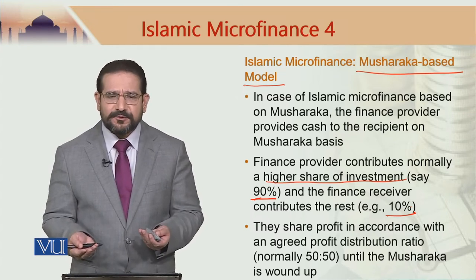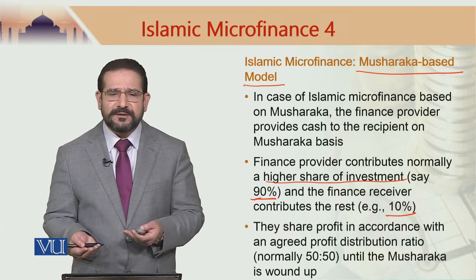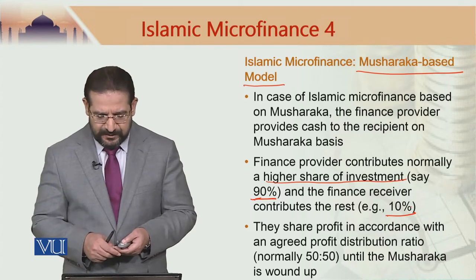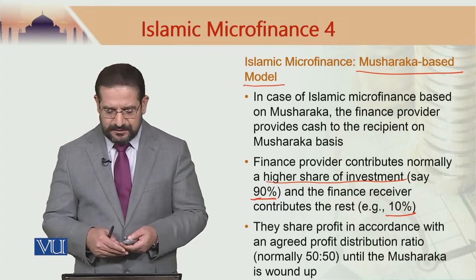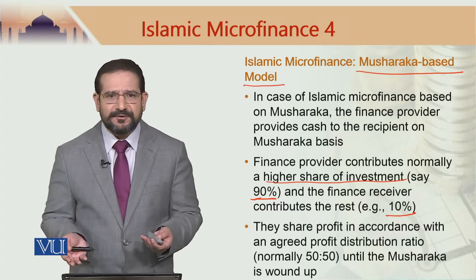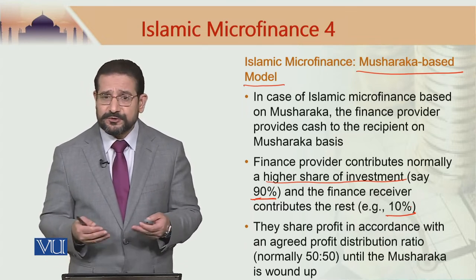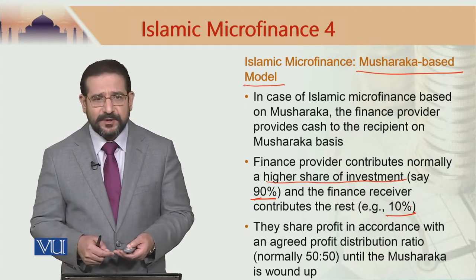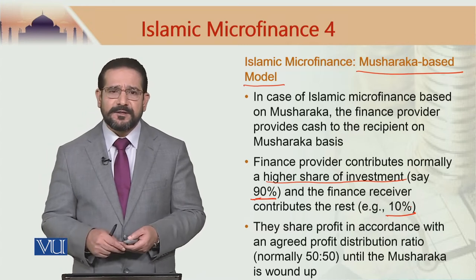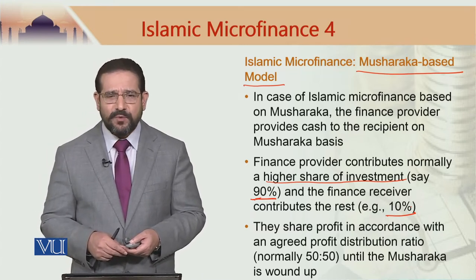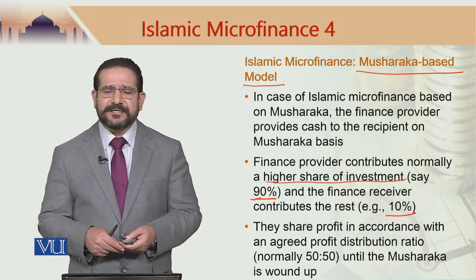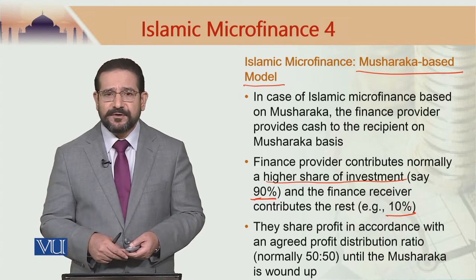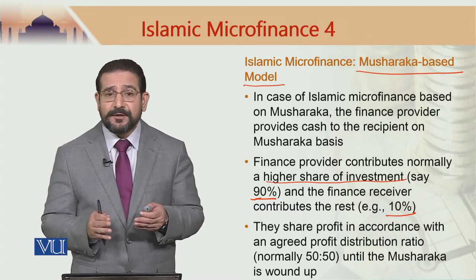There is quite a possibility that without their own contribution, the party would be careless about the money provided by the microfinance company. The two partners share profit in accordance with a pre-agreed profit distribution ratio, which could be 50-50 or any other ratio. At the end, the Musharakah entity is wound up, with the expectation that the finance recipient would have sustained their business.